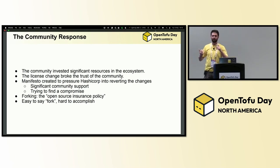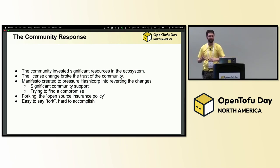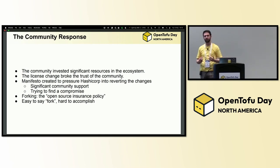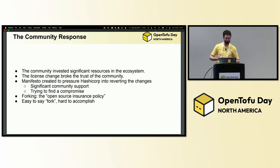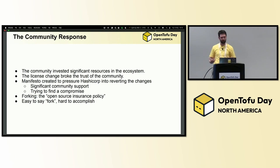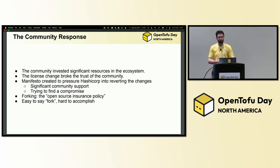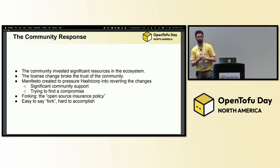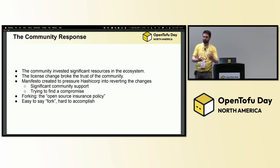The community had evangelized and built on top of this — they felt ownership of something they didn't really own. There was a huge amount of trust that was broken. The manifesto was the first reaction to that. The OpenTofu manifesto — or the OpenTF manifesto at the time — was saying: this piece of infrastructure is bigger than HashiCorp, it's bigger than Terraform.